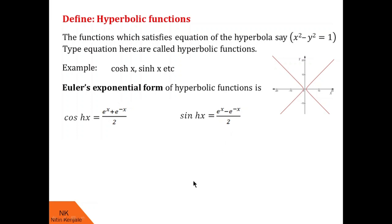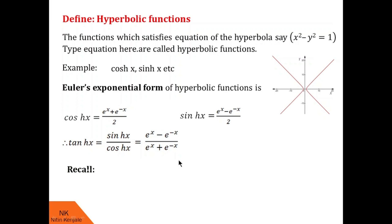From sinh x and cosh x one can find tanh x. Tanh x is sinh x upon cosh x, that is e raised to x minus e raised to minus x upon e raised to x plus e raised to minus x. I hope you understood Euler's exponential form of both hyperbolic functions and circular functions. Let me recall Euler's exponential form for circular functions so you can compare them and remember.